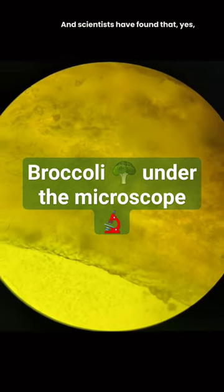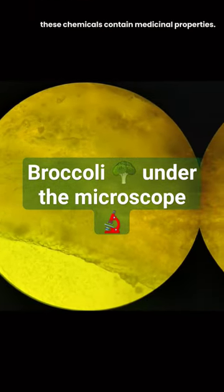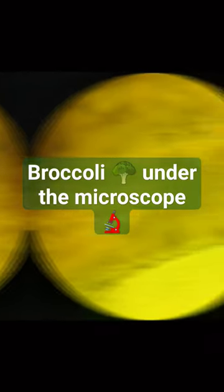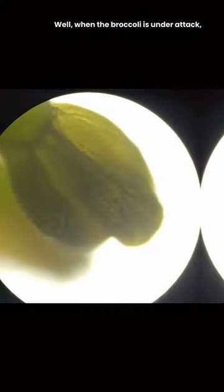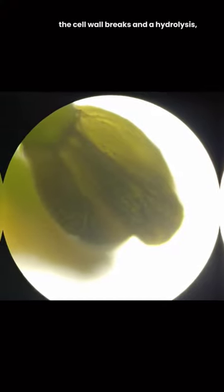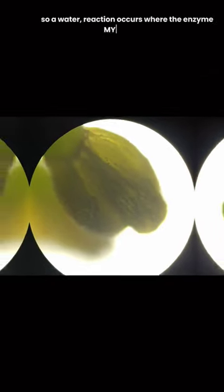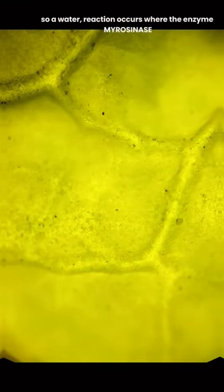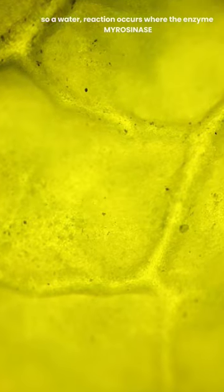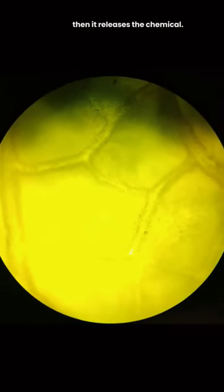Scientists have found that these chemicals contain medicinal properties. This green chemo-prevention chemical is produced when the broccoli is under attack. The cell wall breaks and a hydrolysis reaction occurs where the enzyme myrosinase breaks down compounds and releases